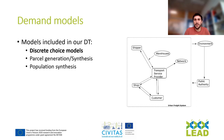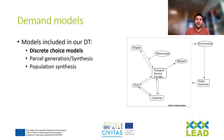Discrete choice models help us understand why certain decisions are being made — for example, why do people choose between different carriers, or why do people adopt crowd shipping compared to traditional couriers. This is done through a statistical method that considers discrete choices such as choosing mode A or mode B, or carrier A versus carrier B, and translates these into consumer preferences. We estimate a utility function where we parameterize consumer demand to understand how much people value cost, level of service, reliability, and other parameters.